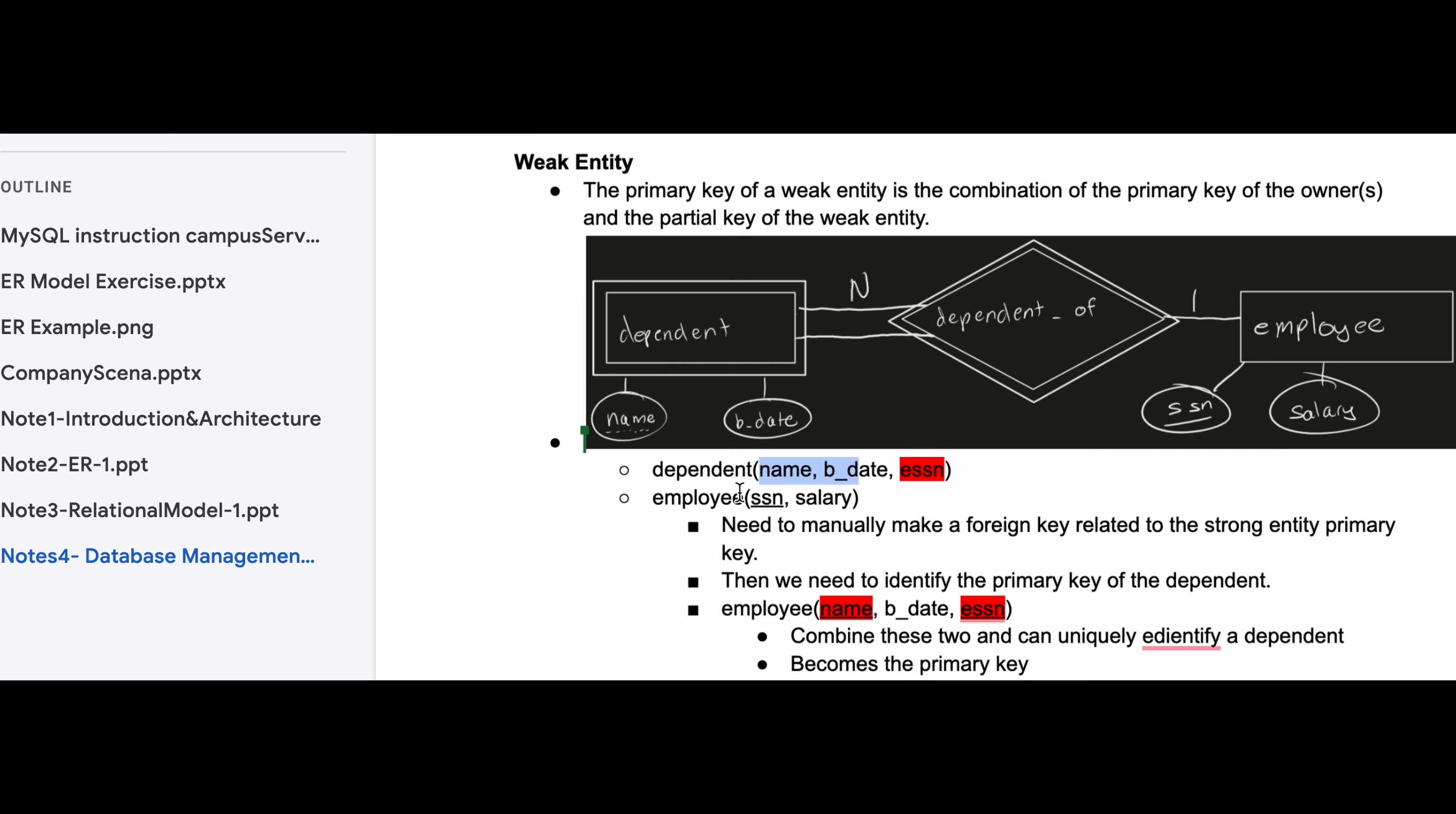So you write these two down, you write the dependent down, and now you need to manually make a foreign key related to the strong entity and this is related to the strong entity's primary key.